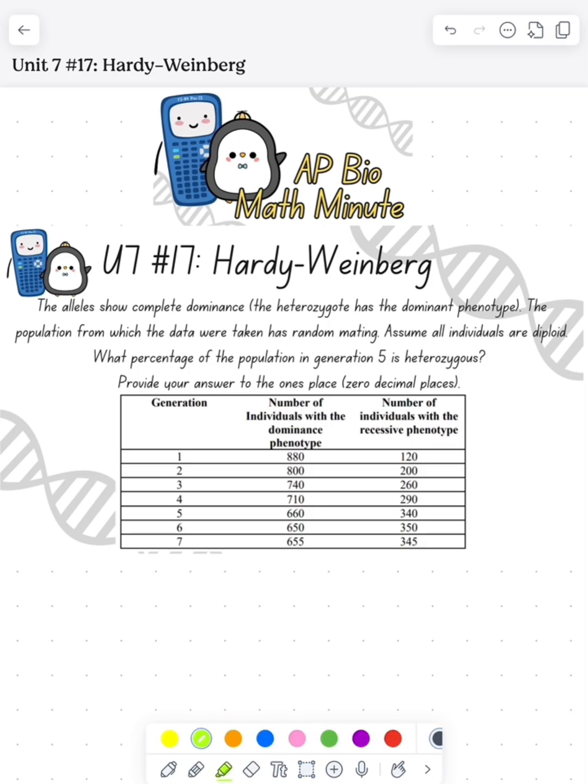The same question as yesterday in which we have complete dominance and the heterozygous is going to show the dominant phenotype. We need to figure out what percentage of the population in generation 5 is heterozygous, and we're giving it to the ones place.